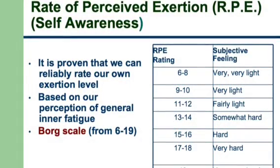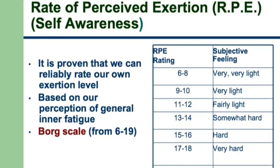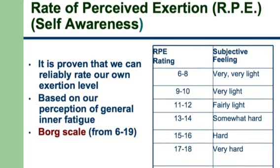Let's discuss the rate of perceived exertion as a measure of exercise intensity. This scale starts from 6 and ends at 19, corresponding to how you feel after doing exercise. If you feel the level of exercise is very, very light, you are probably achieving 60 to 80 heartbeats per minute, which corresponds to a rate of perceived exertion of 6 to 8. Similarly, if you feel the exercise level is hard, you are probably reaching 150 to 160 beats per minute. Although it's not 100 percent accurate, it is considered a valid and practical tool for measuring exercise intensity if you do not have a heart rate monitor.